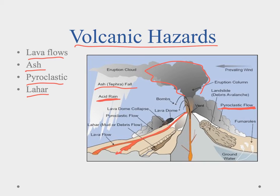The final hazard is the lahar — muddy debris flows that generally happen when there's a snowcap on top of a volcano. As the volcano erupts, snow melts and mixes with mud to create massive mudflows down the slopes. That covers our video on volcanic eruptions; the lesson will go into more detail. Good luck on your quiz and we'll see you in the next video.